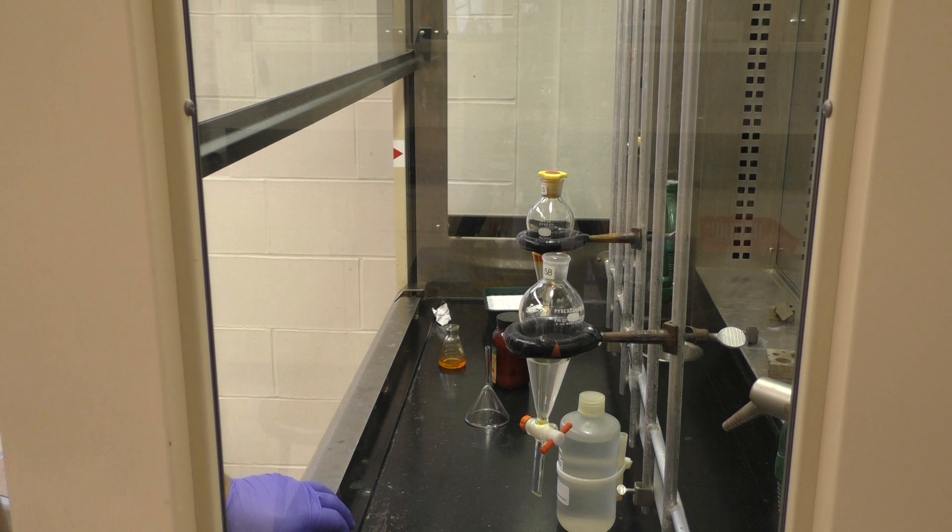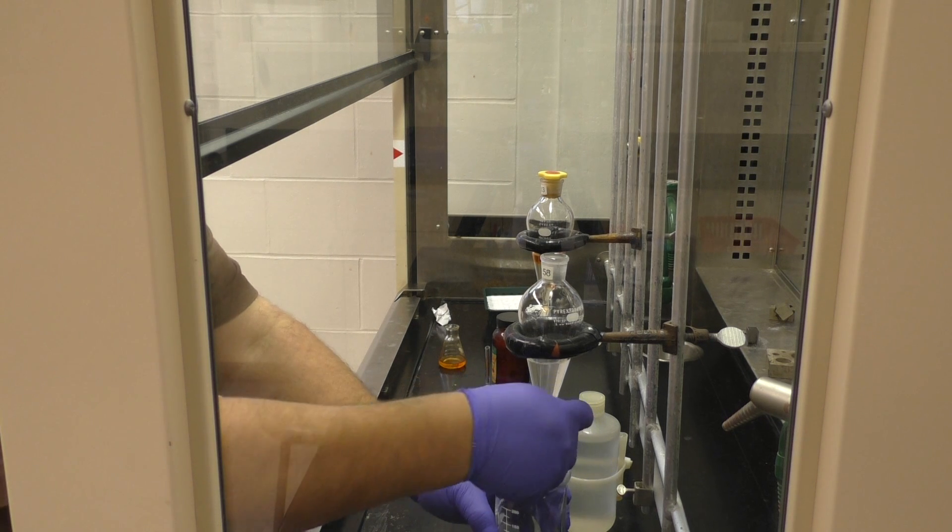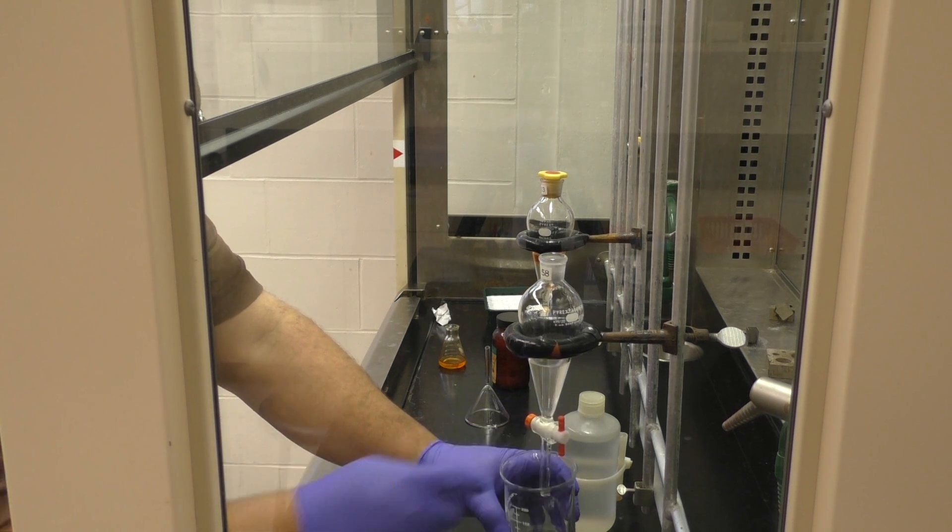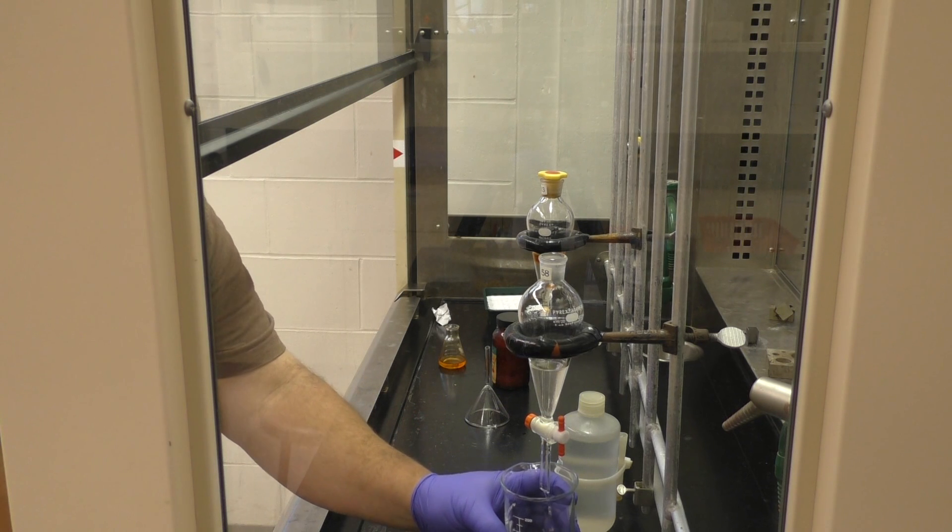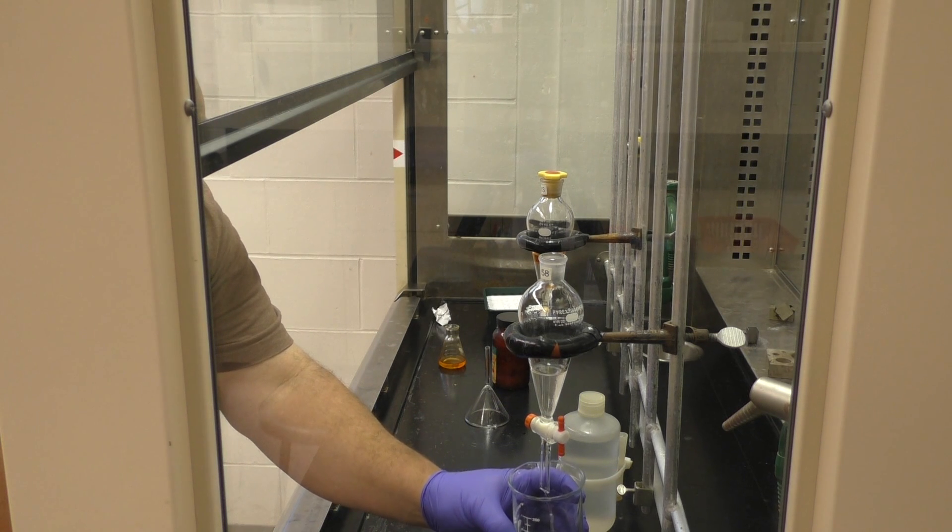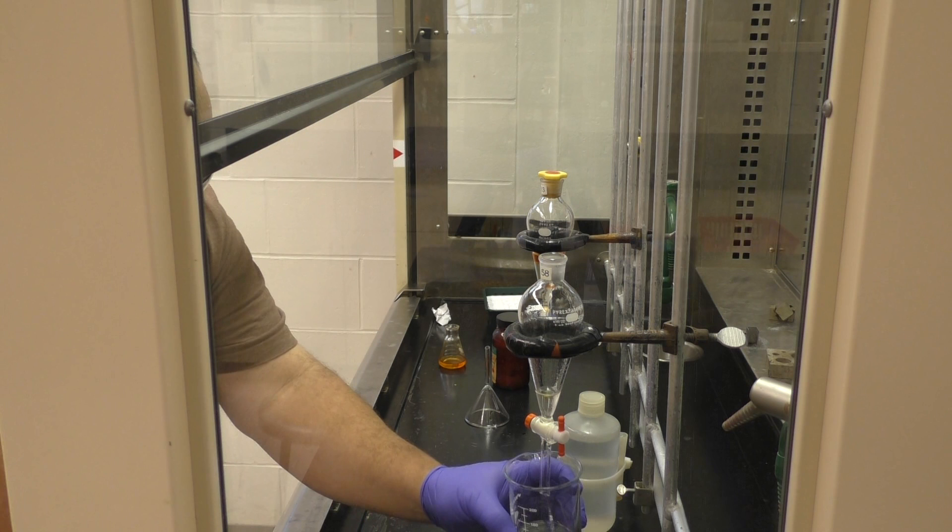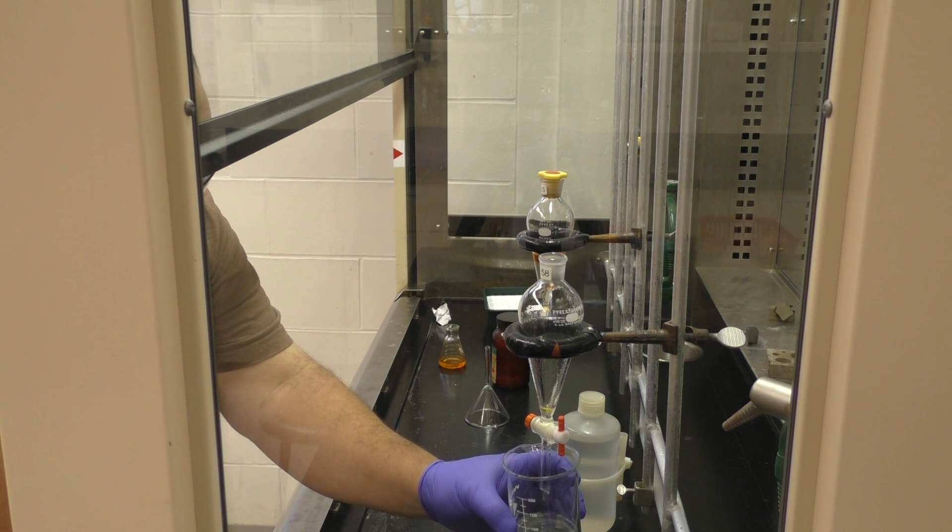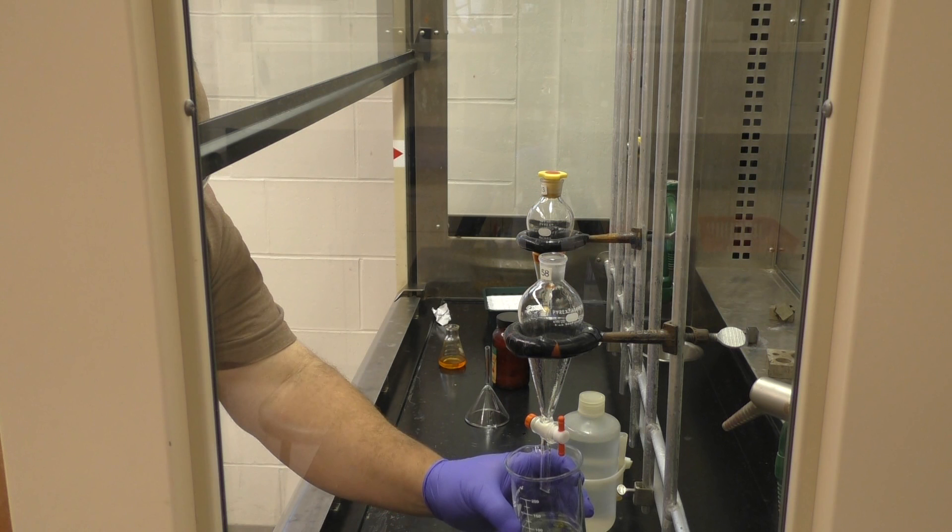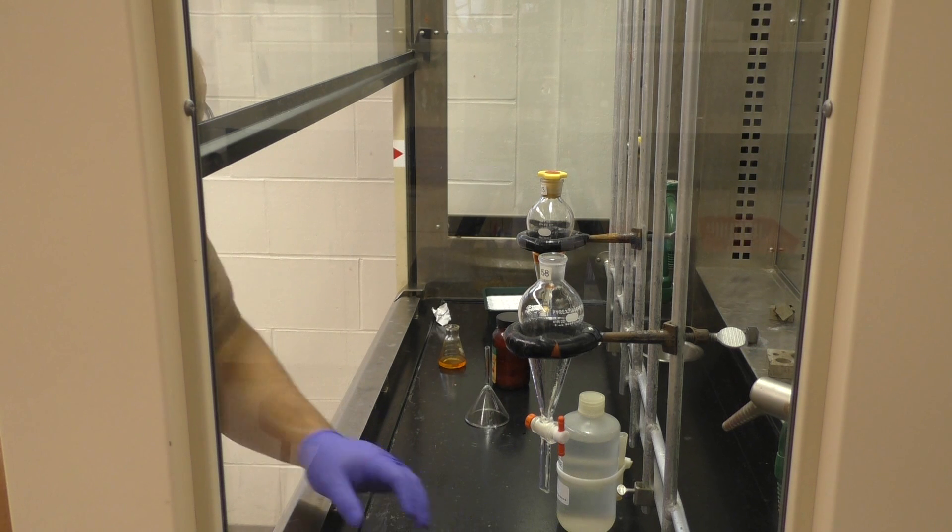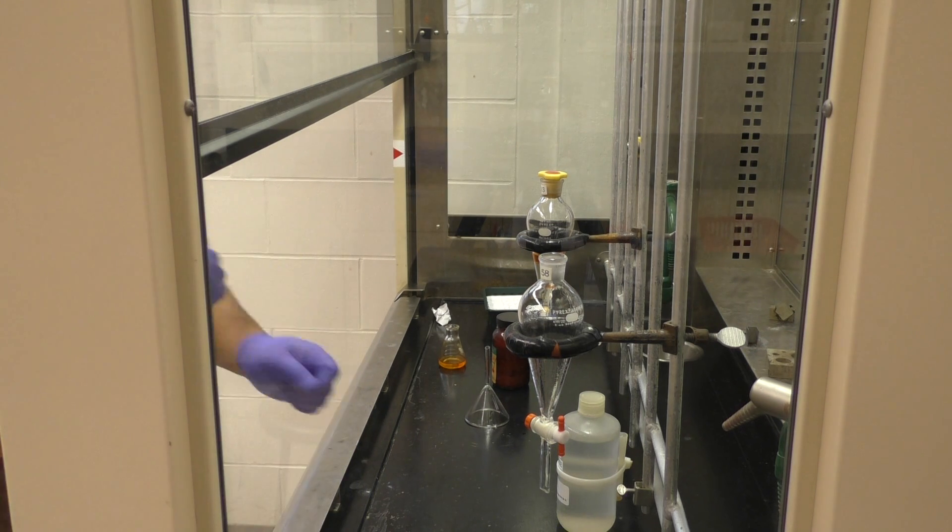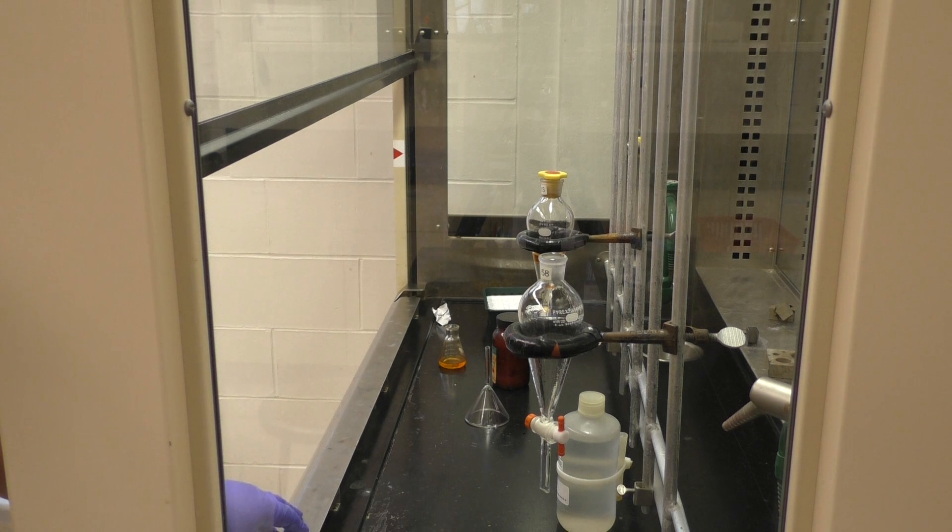Then you go get another vessel, collect all the aqueous, including the little bit of organic that was left behind. And that's the way you want to go about it. Make sure you do hold that vessel up close to the sub funnel because it does not drip straight down. And again, part of the mess in the hood, you can easily contain it if you do things that make sense.